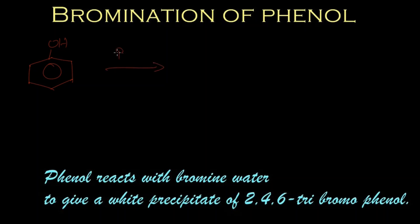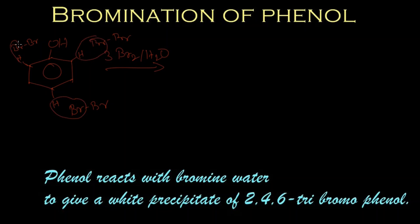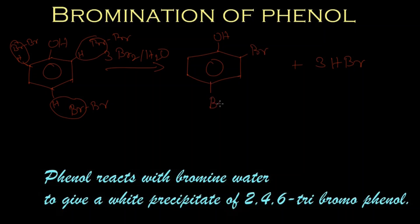To phenol, bromine water (Br₂/H₂O) — three molecules of bromine — is added. There is one hydrogen at the ortho positions and one hydrogen at the para position. The three molecules of bromine react, and three HBr (hydrogen bromide) molecules are eliminated. The bromine atoms replace the hydrogen atoms at the second, fourth, and sixth positions of the ring.